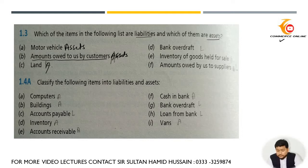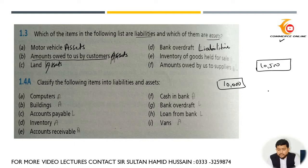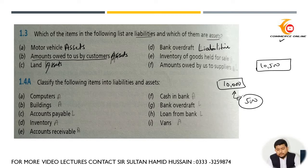Land also comes under assets. Bank overdraft is a liabilities account. What is bank overdraft? Suppose you have ten thousand in your bank account and you wrote a check of ten thousand five hundred — the bank gives you the extra five hundred when you go to withdraw, and that is the liability known as bank overdraft.